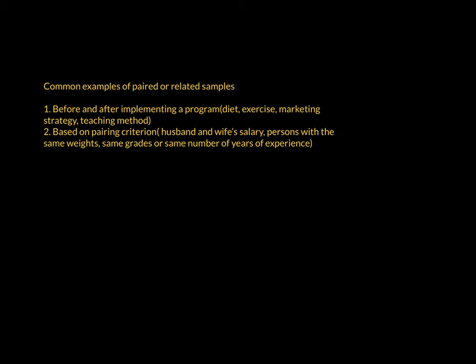Another case is based on a pairing criterion, where your data involves values from related samples. For example, if you are checking whether there is a significant difference between the salary of a husband and his wife, you have two sets of data from related samples. You can also have values taken from persons with the same weights, grades, or years of experience — they are related because they share common values.